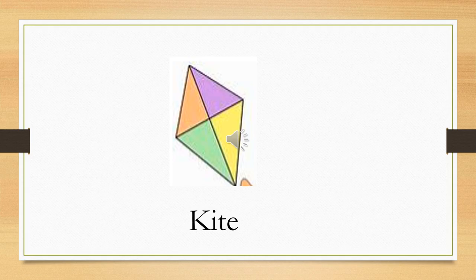The next object — can you see it? It flies high in the sky and children love to play with it. It is a kite! And it is diamond in shape. The shape of the kite is diamond.